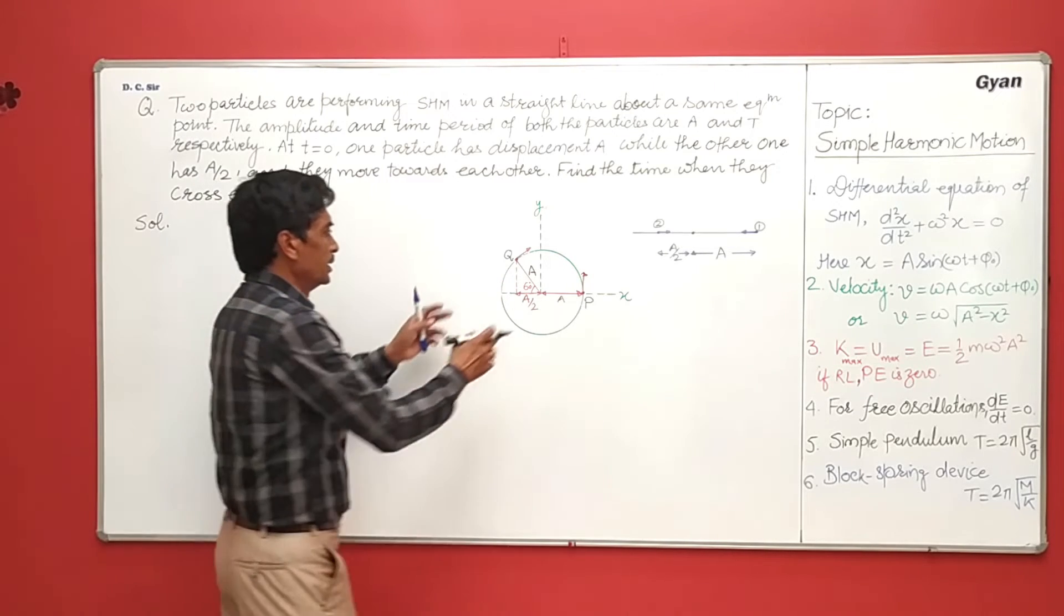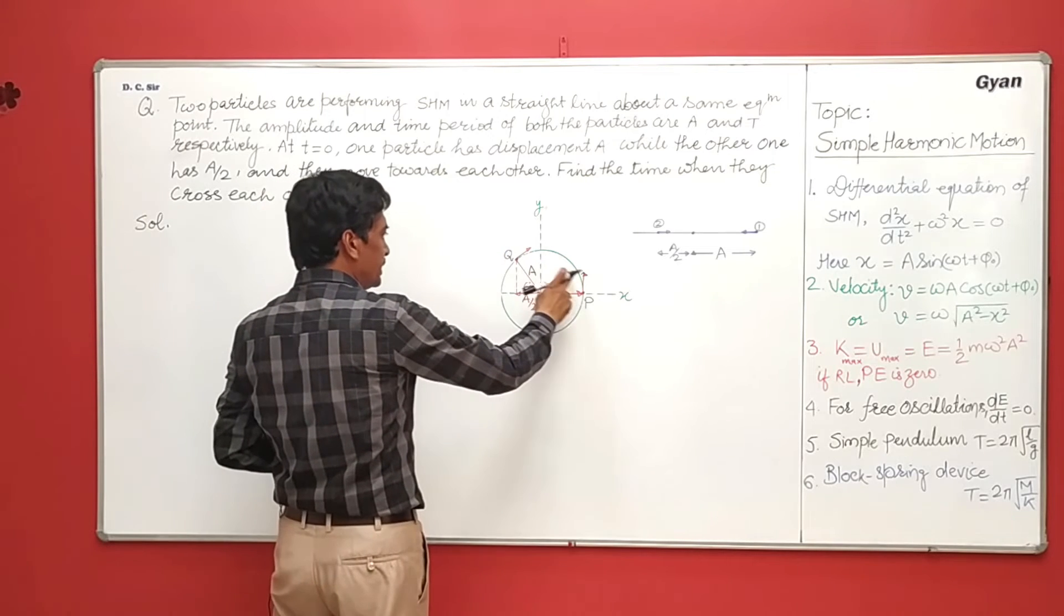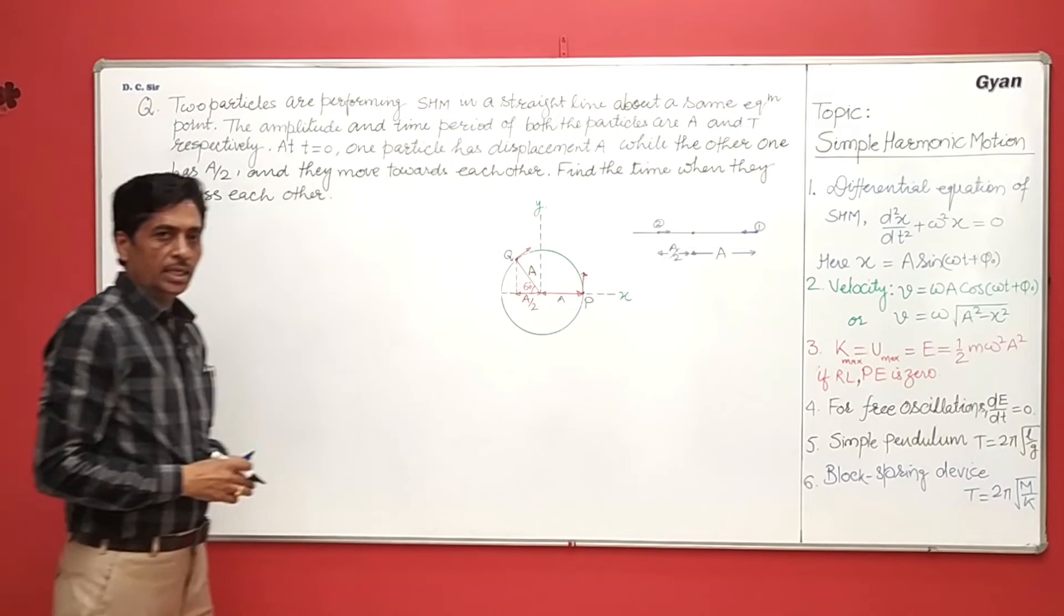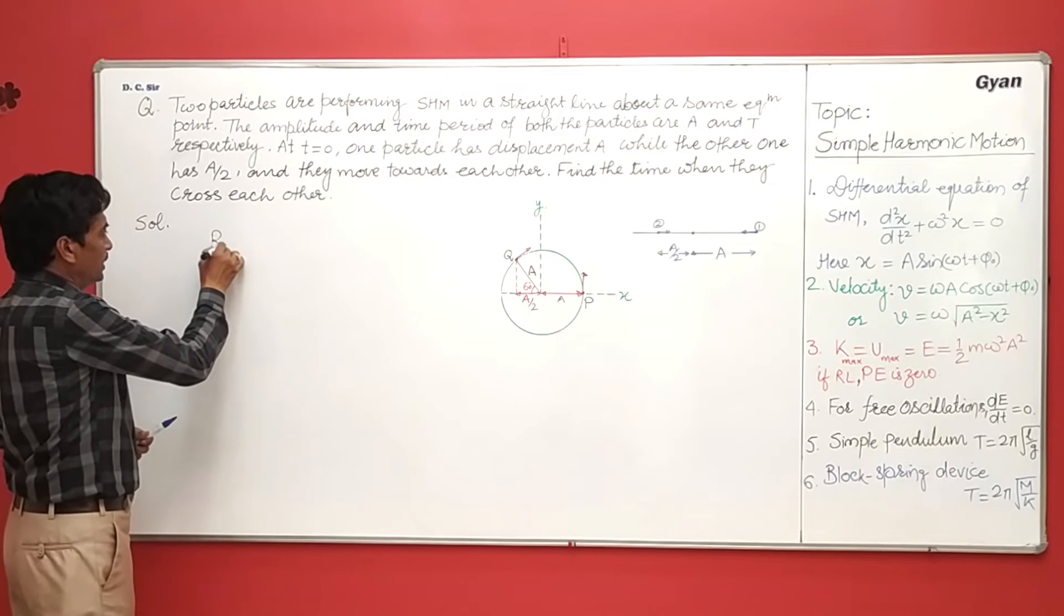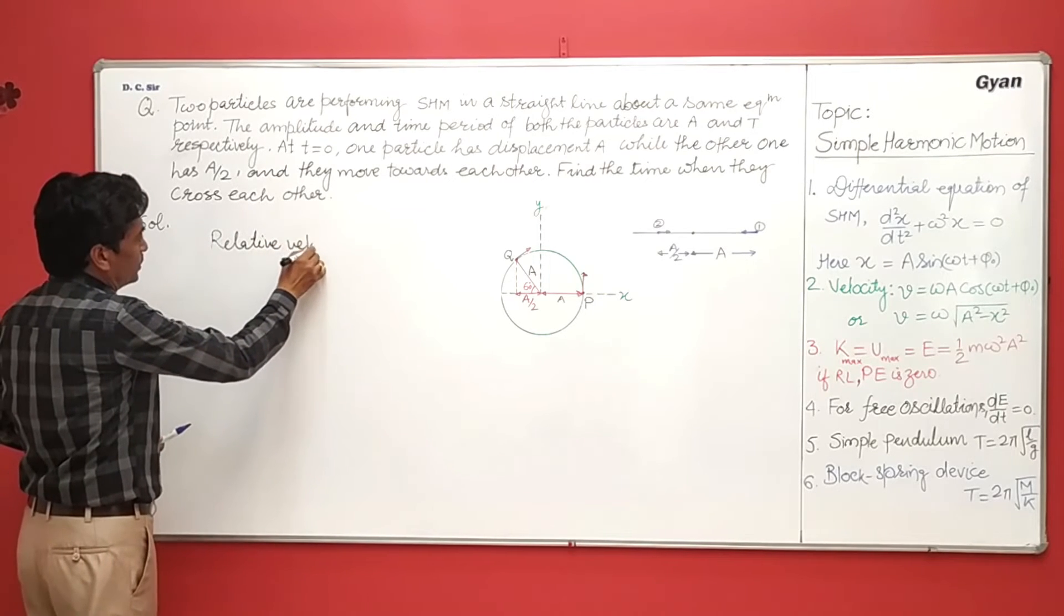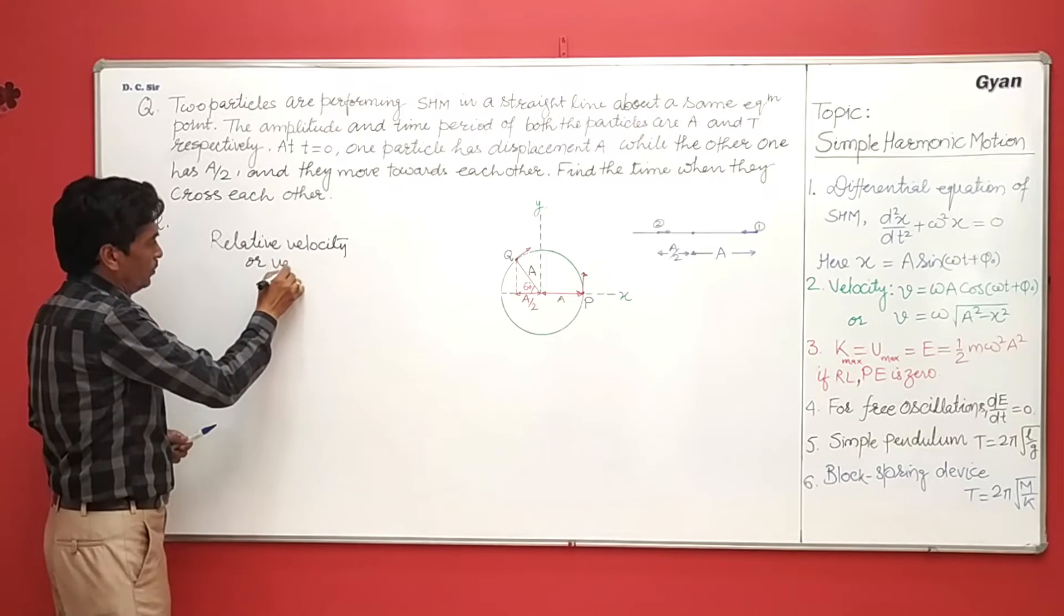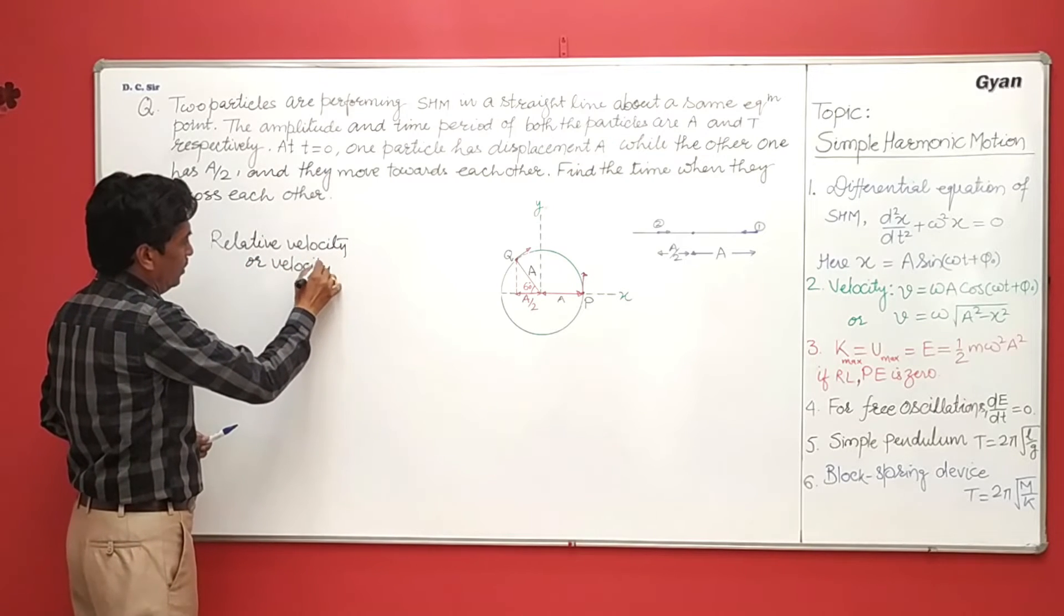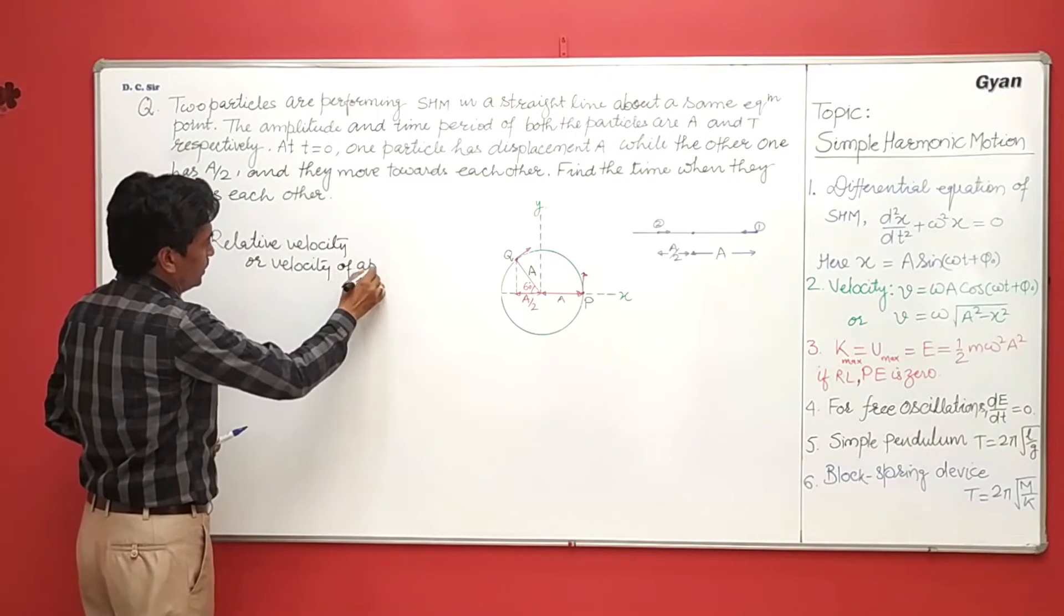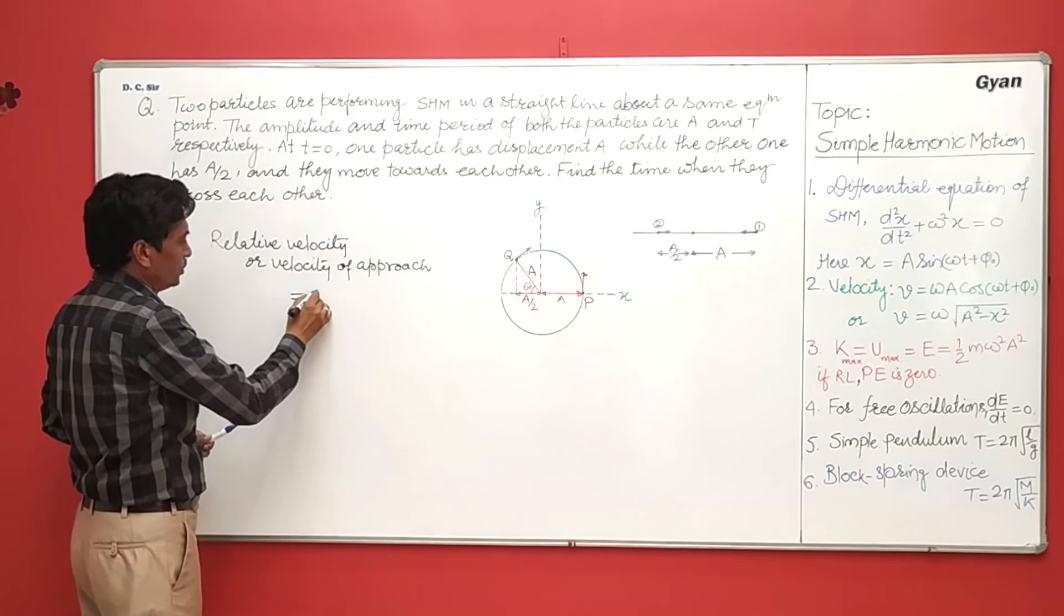Now as they move towards each other, its angular velocity may be omega. So their relative velocity or velocity of approach is equal to 2 omega.